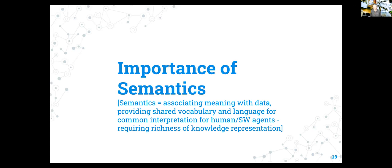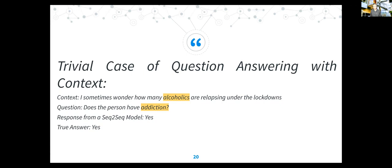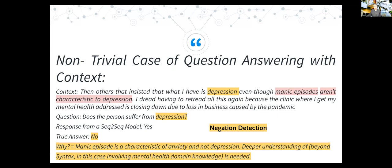Semantics means the association of meaning with data. Take a simple example of question answering: 'Does this person have addiction?' - the answer is yes using a seq2seq model, and that happens to be correct. But take a particular text and ask 'Does this person suffer from depression?' - the machine will give you yes, but in reality the answer is no. What you need to be able to do is reason: in many episodes it is the characteristics of anxiety and not depression, and the person talks about many episodes. These kinds of reasoning are necessary to correctly answer such questions.